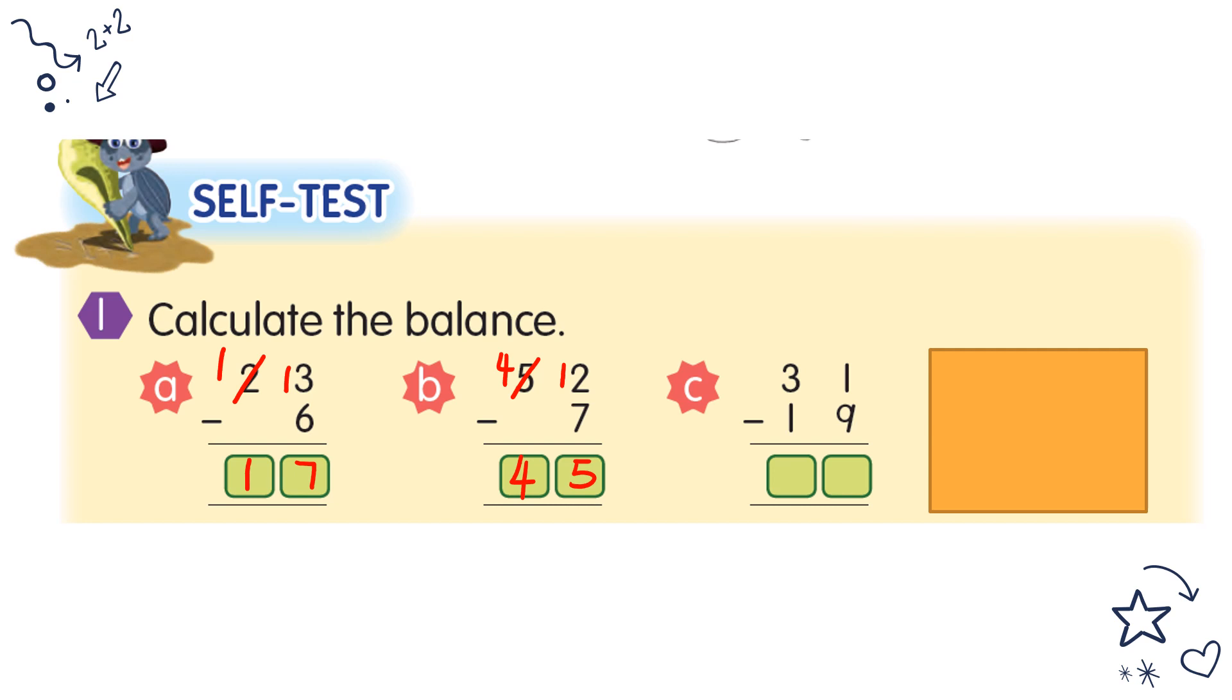Now 31 minus 9. 31 minus 9, not enough, you borrow. Borrow from 10, this becomes 11. 11 minus 9 equals 2. 2 minus 1 equals 1. So your answer is 12.